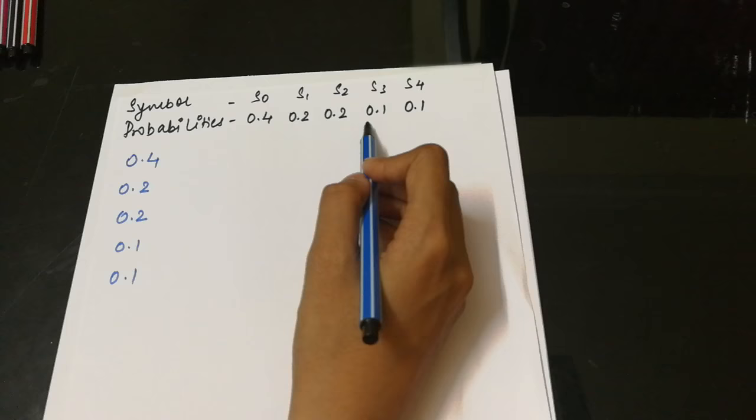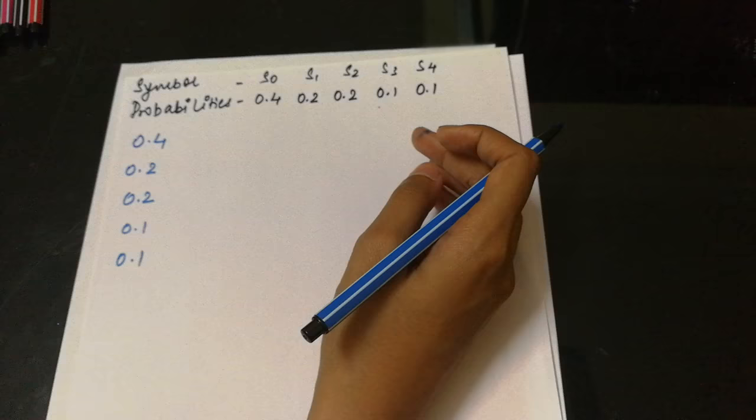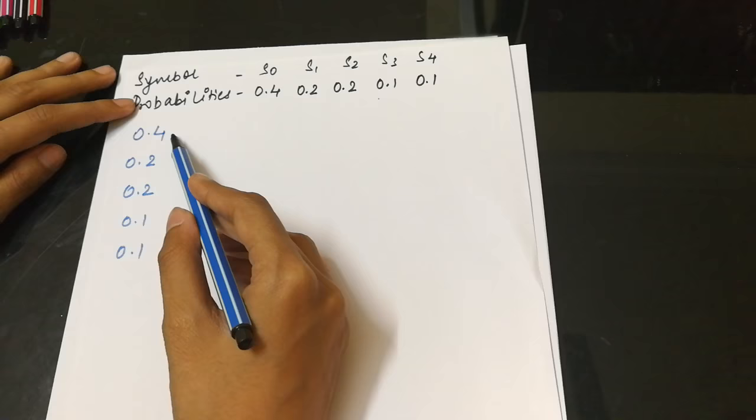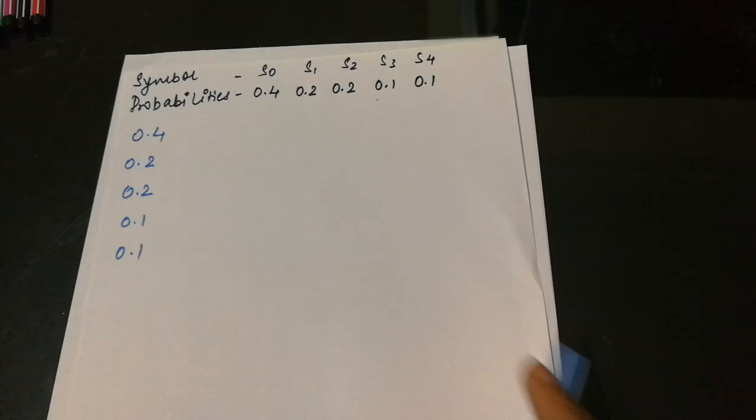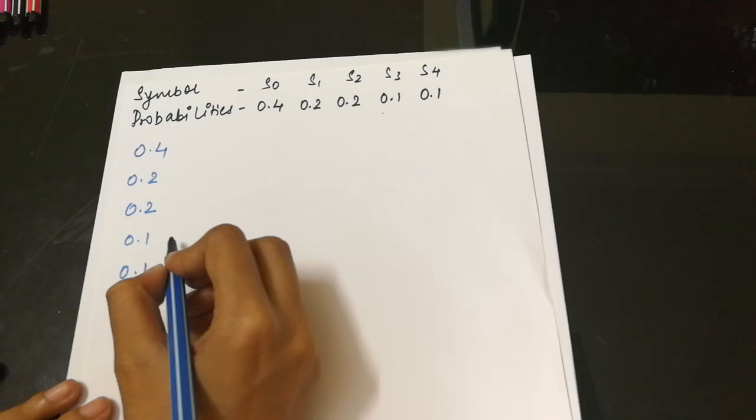Since these are already in decreasing order, we have listed these probabilities in vertical form. Now our first step is to add the lowermost probabilities. These two probabilities will yield 0.2, so we write down here.